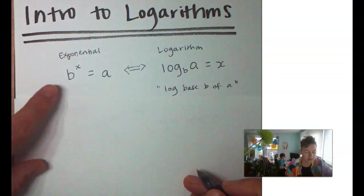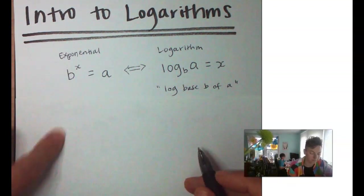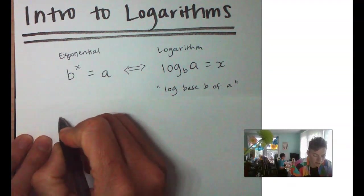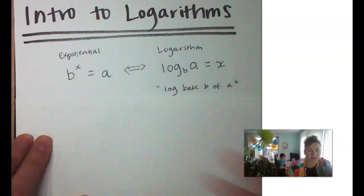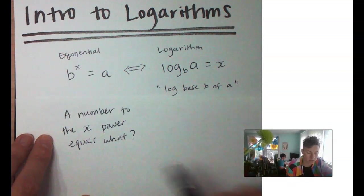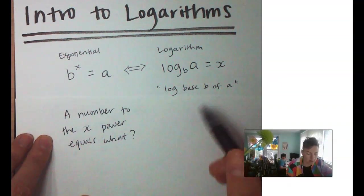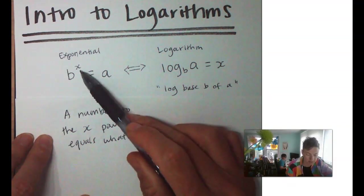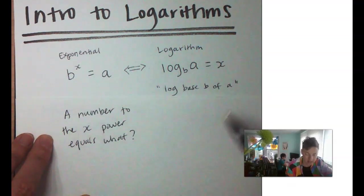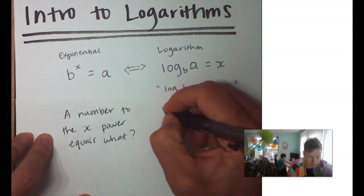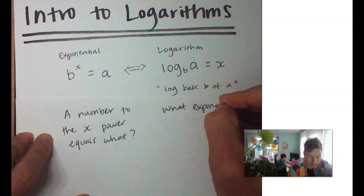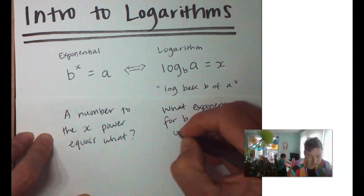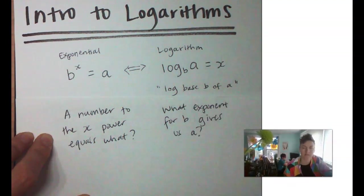So, the questions that we're asking in exponential versus log form are, well, the question for exponential is a number to some power gives us what? A number to the x power equals what? Now, the logarithm question is saying what exponent for b would give us a? What exponent for b gives us a?